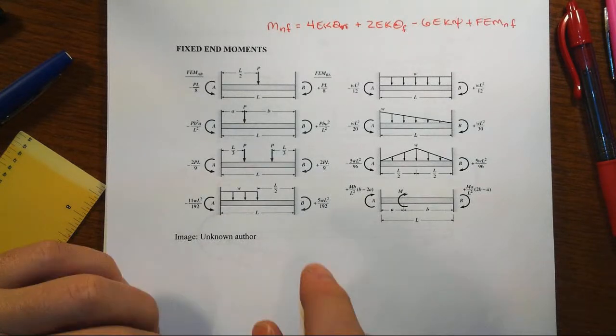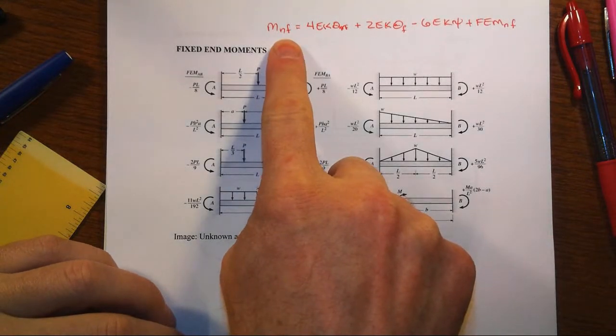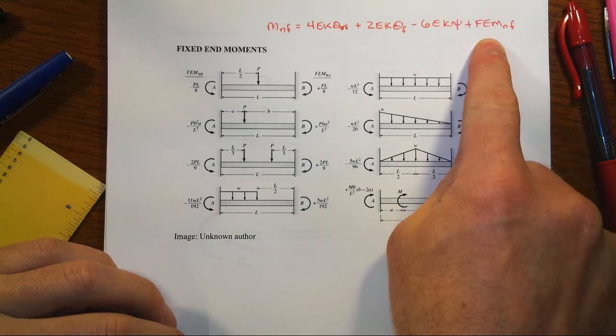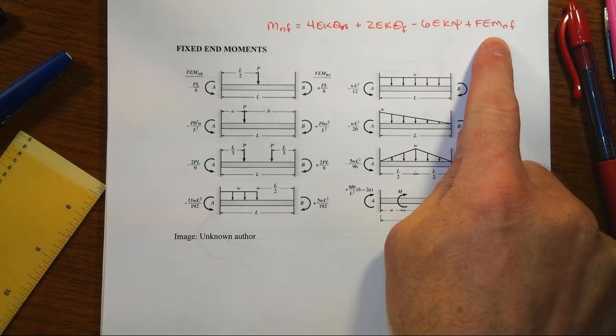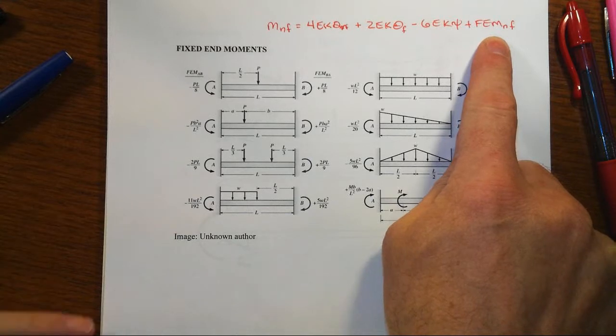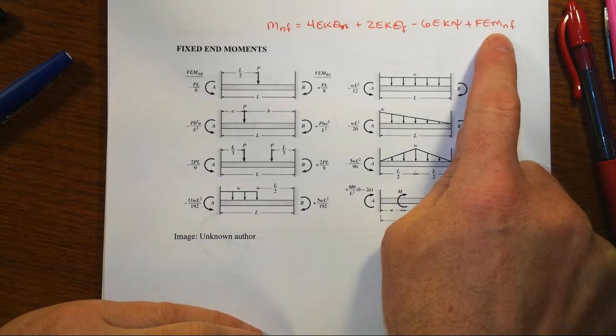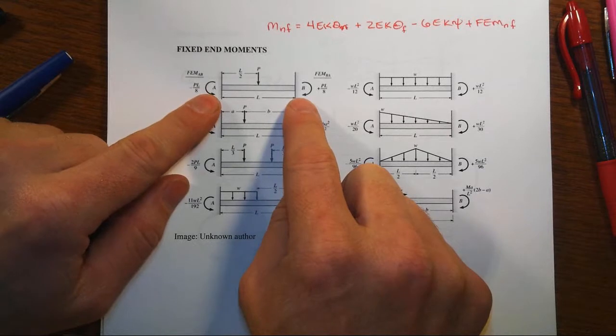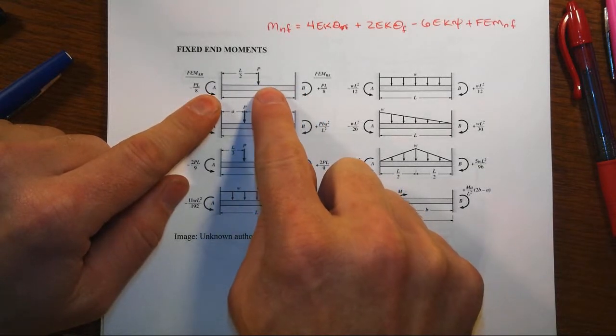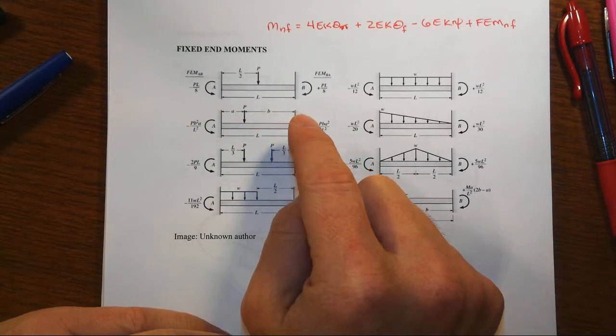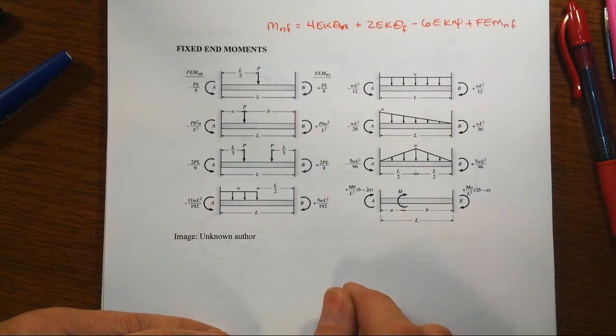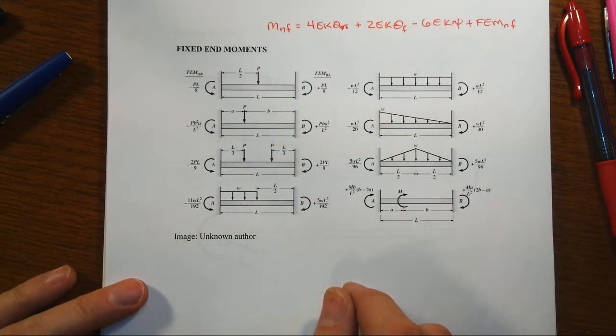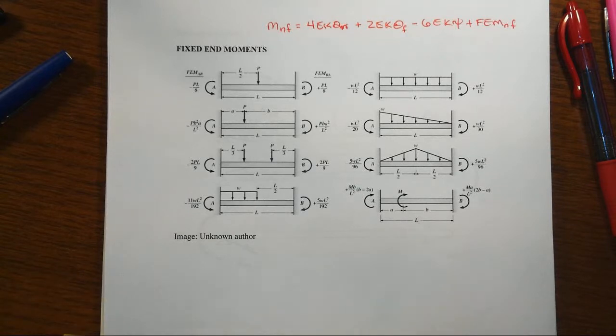Recall in the derivation of the slope deflection equation that we ultimately ended up with a load-related term that became associated with the fixed end moment. We called it that because it's the effect in the end moments when you have fixed ends and then you have a load that's applied within the member. Usually we look these things up in tables, we don't derive them, but where do they really come from? That's the subject of this short video.